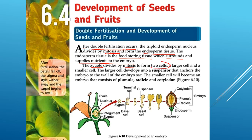The zygote divides by mitosis to form two cells: one larger cell and one smaller cell. Look at figure 6.10, the development of an embryo. Here is the zygote — it divides by mitosis forming the two cells, larger and smaller. The larger cell develops into a suspensor.